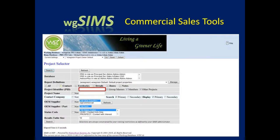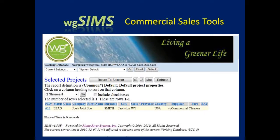Now let's try some other methods. After you've clicked the Projects button, the Project Selector will show up with several ways to find projects. If you're looking for a specific project and know the Project ID number, you can enter it into the Project Identifier field. In this example, we'll enter Project 622 and click Search. Sims will display Project 622 if it's your project or if someone has given you permission to view it. To return, click the Return to Selector button.